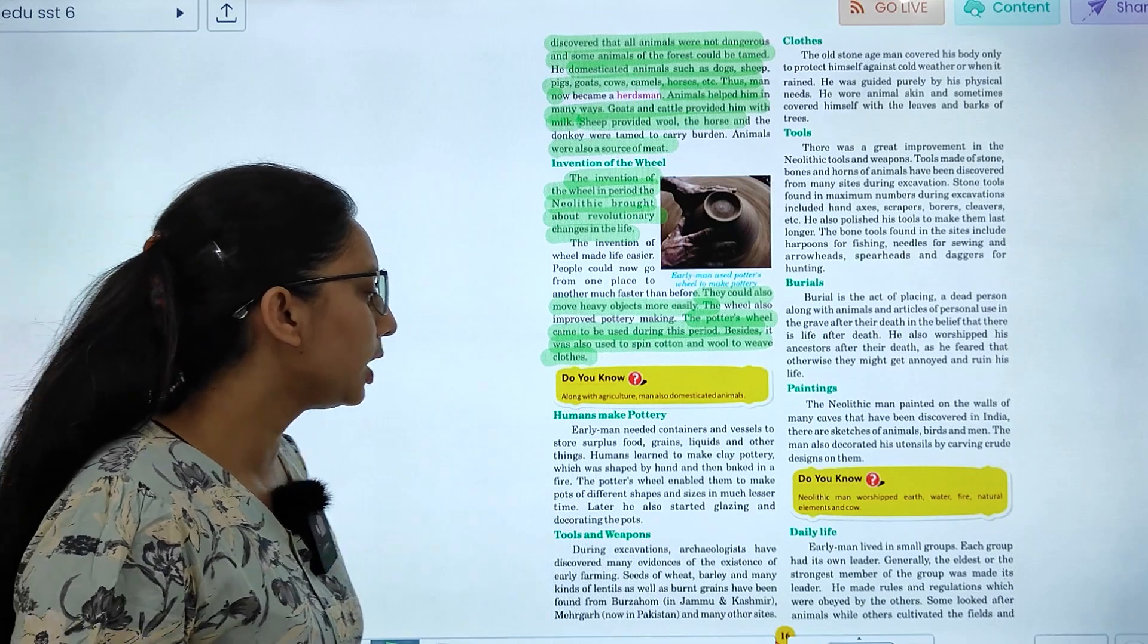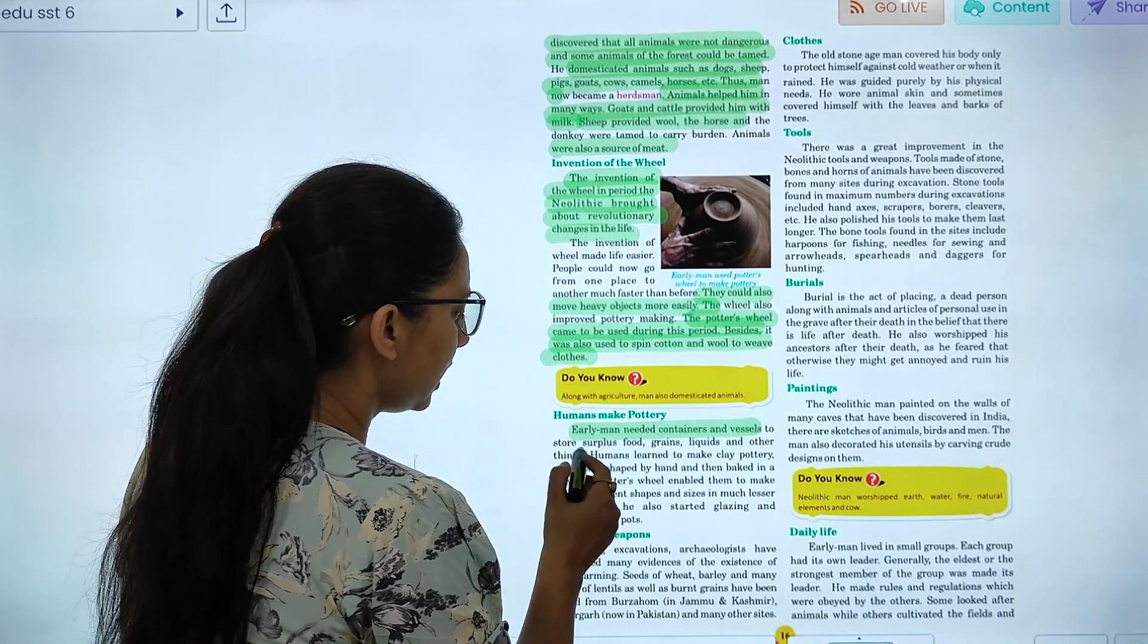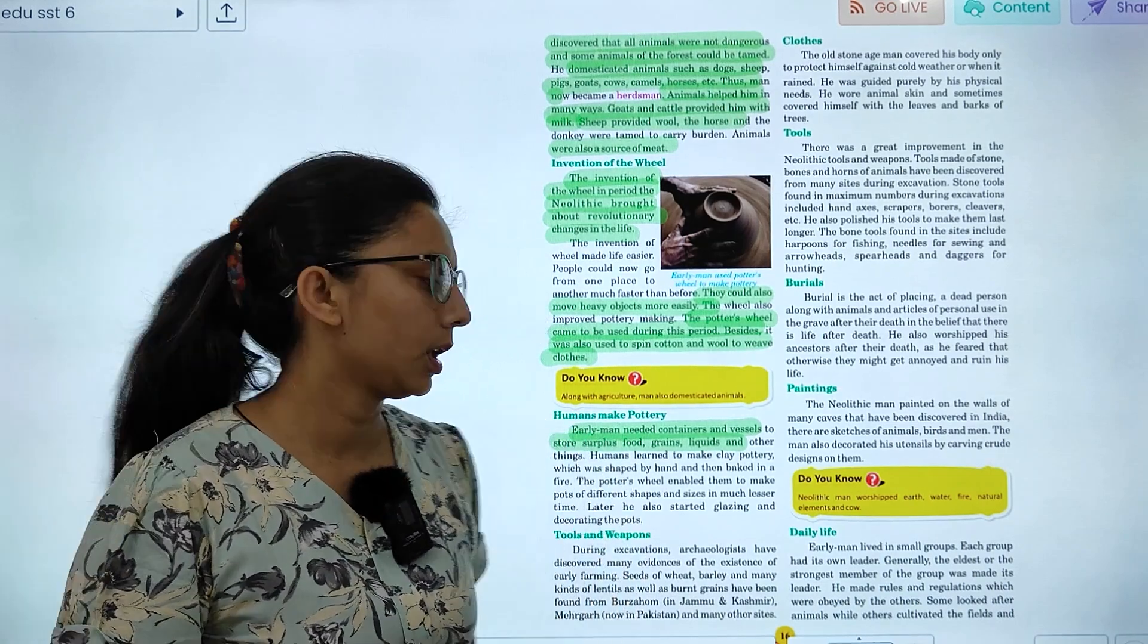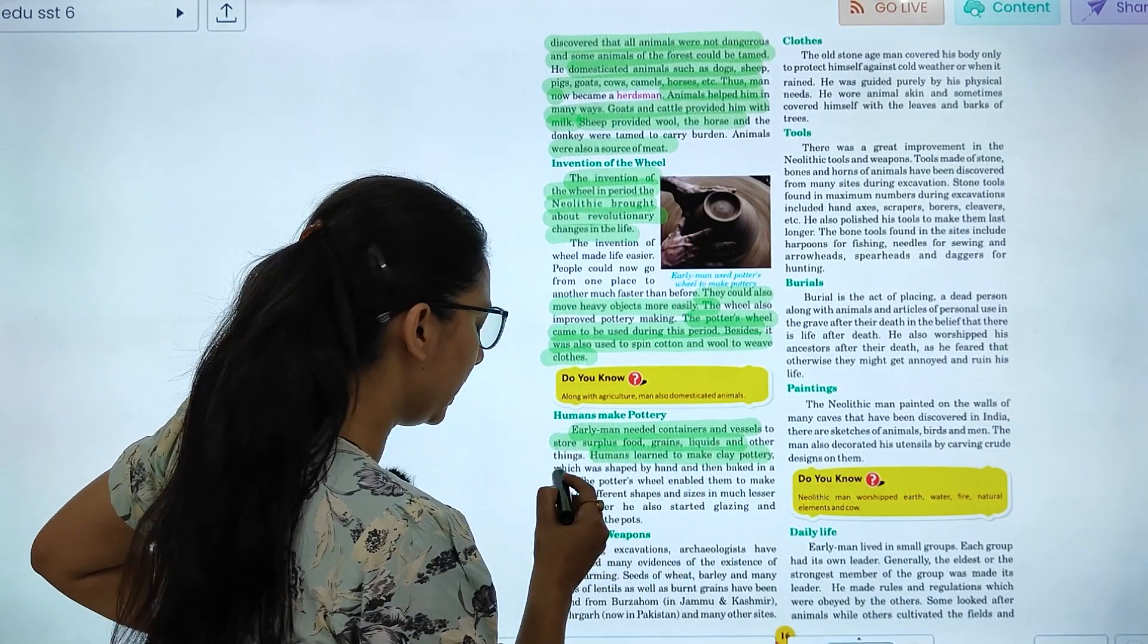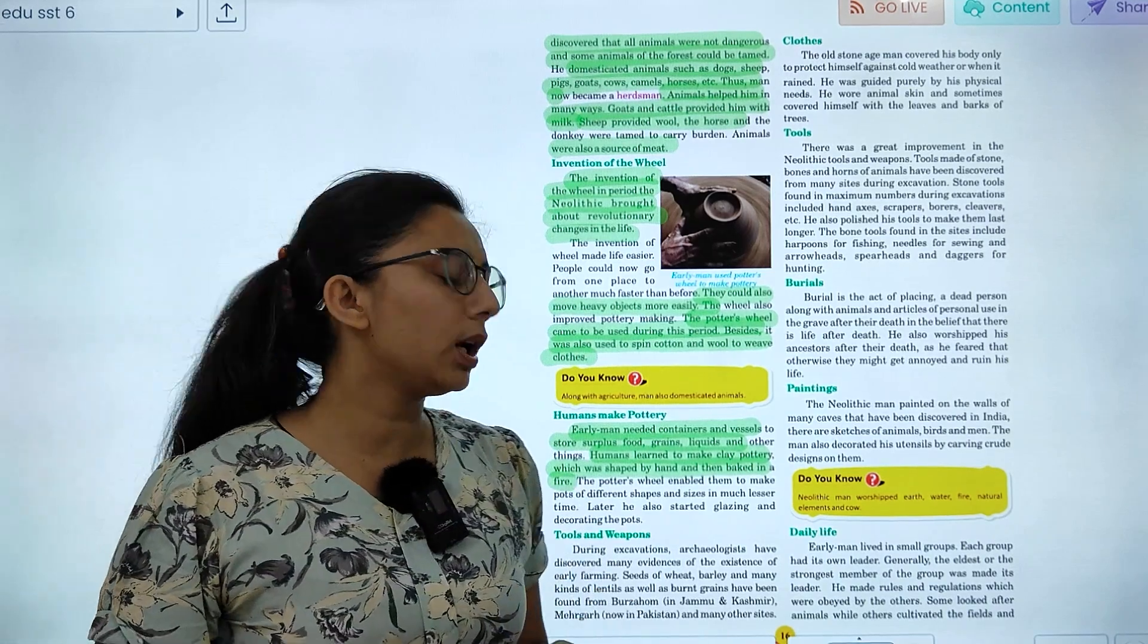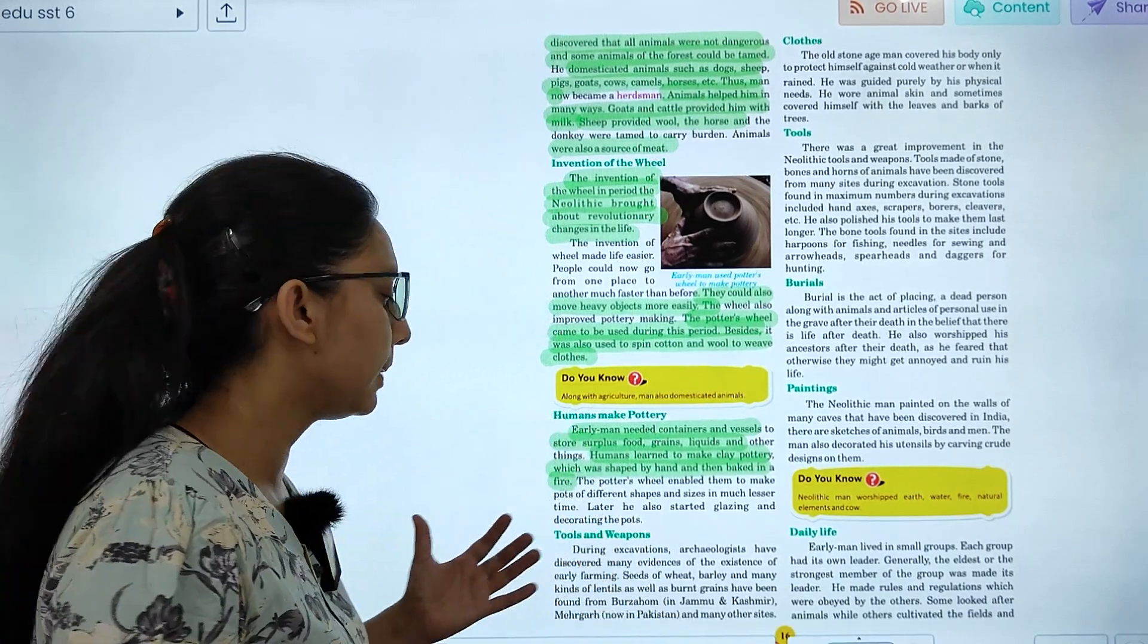Then we will talk about human makes pottery. Early men needed container vessels to store surplus food, grains and liquids. Humans learned to make clay pottery which is shaped by hand and they are baked in fire.